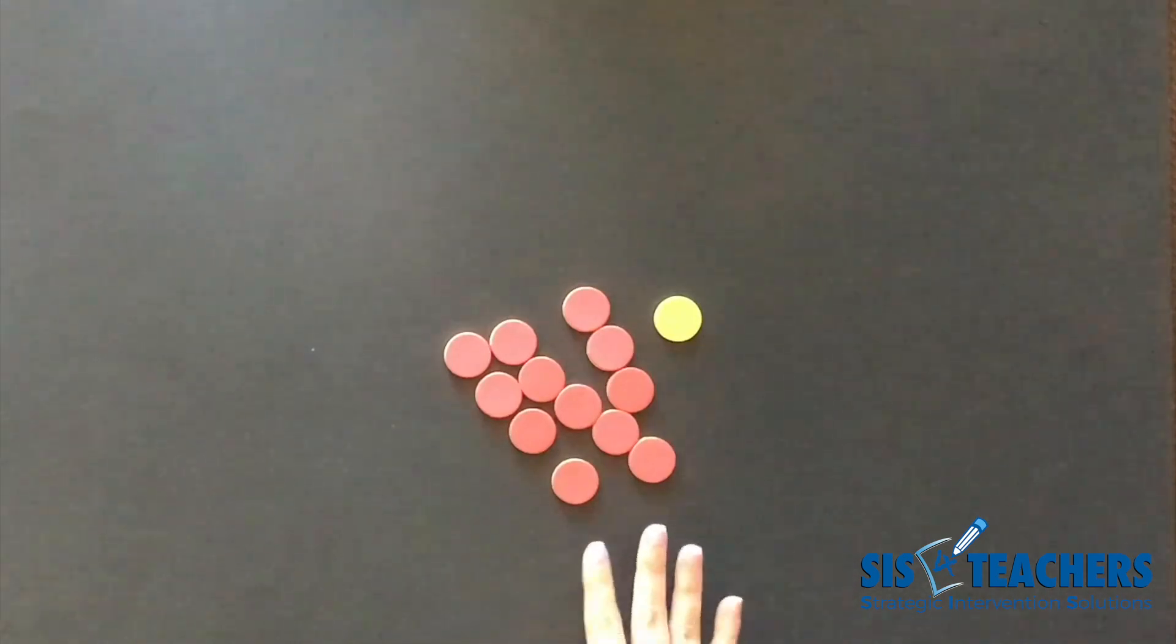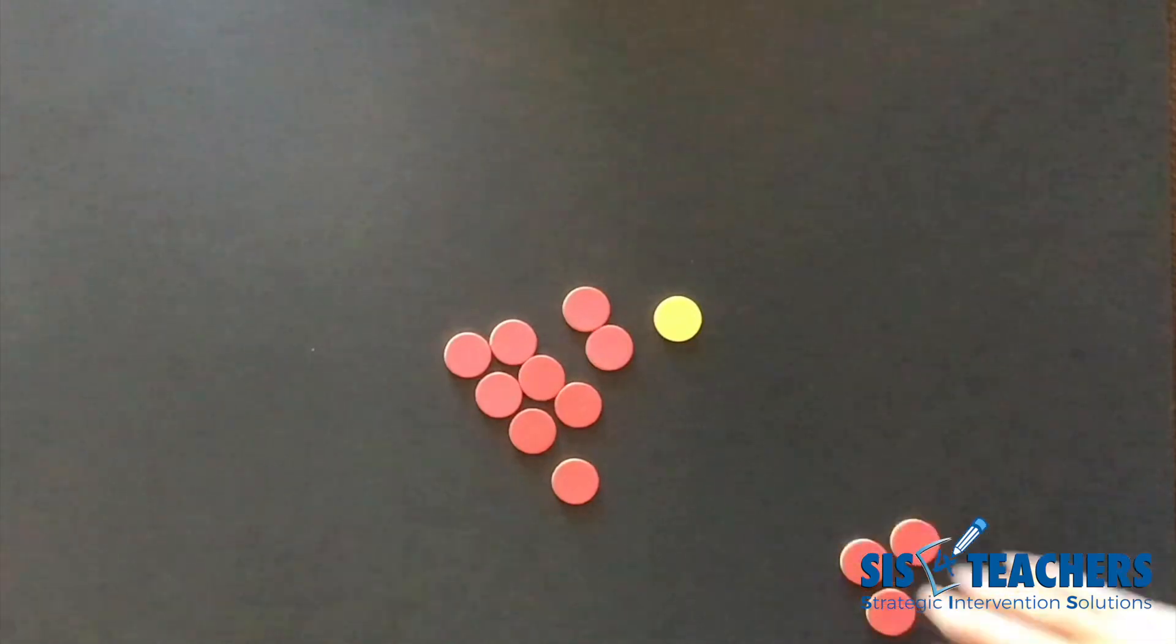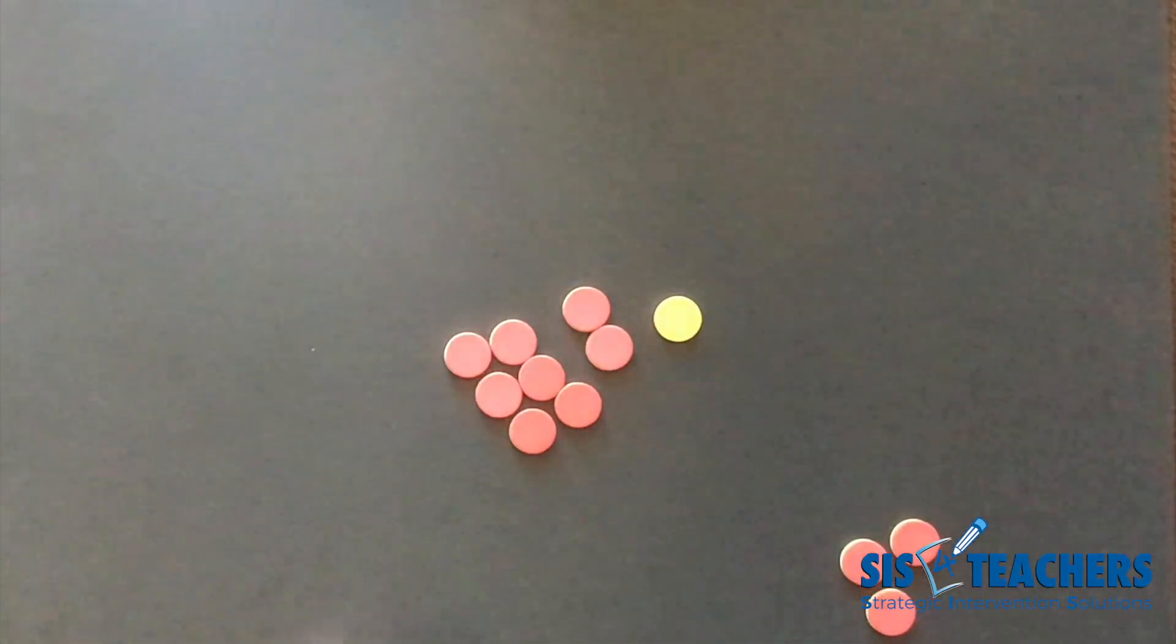So I'm going to let my partner go first. She's going to decide if she wants to pick one, two, or three counters. It's my pick if I want to pick one, two, or three counters.